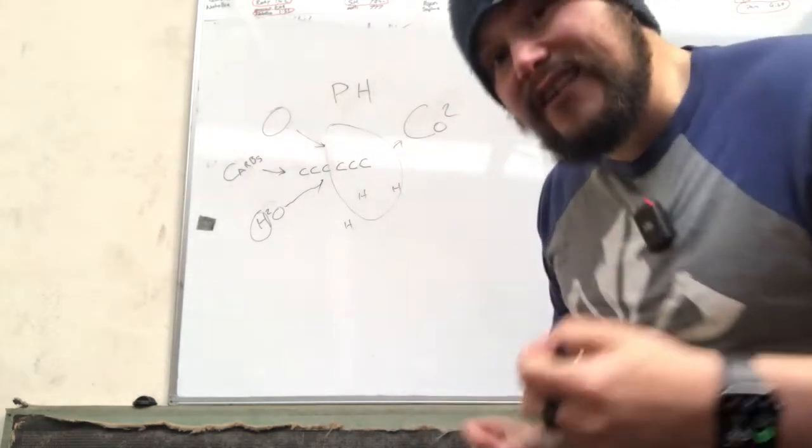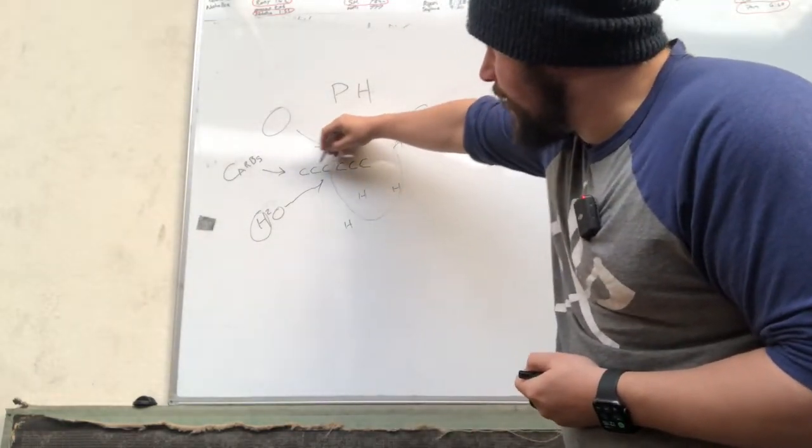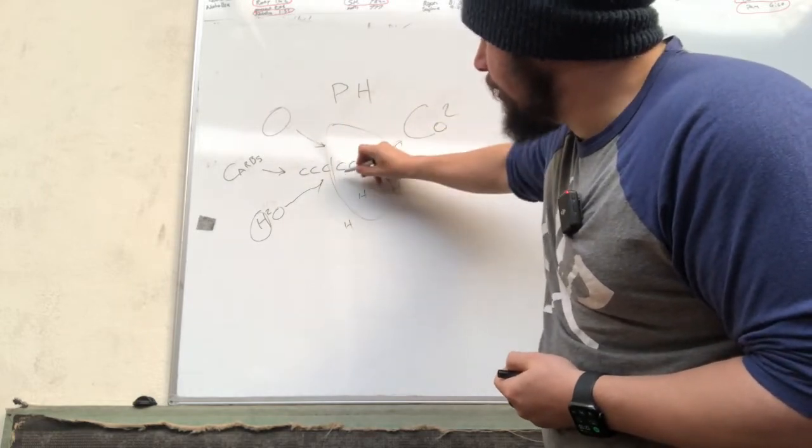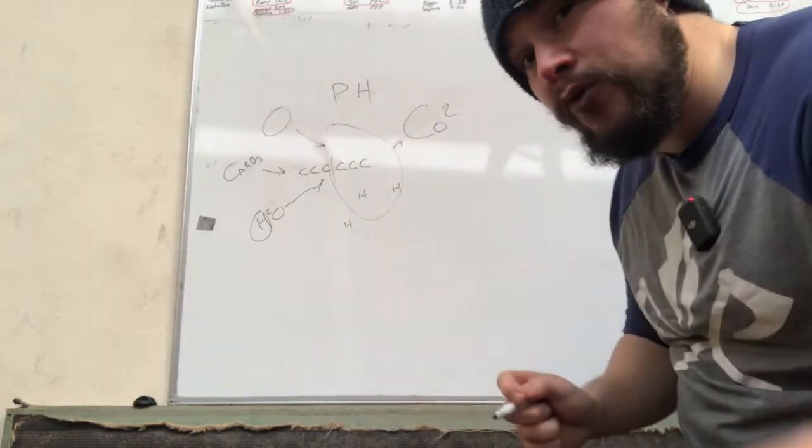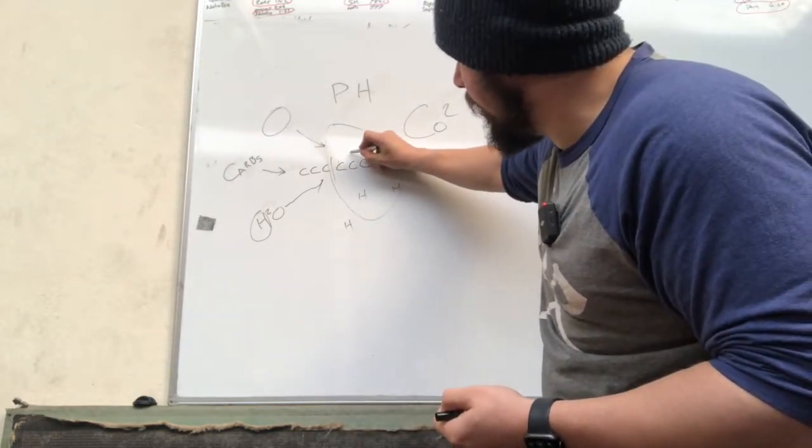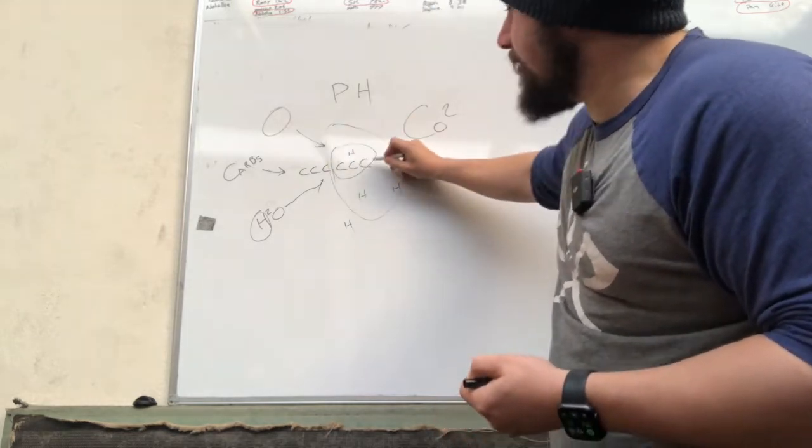So what the body does, it creates a thing called lactate. And all a lactate is, is it splits a carbon chain or a glucose in half. So it becomes a three-carbon chain. That's called pyruvate. And pyruvate joins with hydrogen, so it becomes HCTC. And this molecule we call lactate.